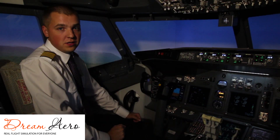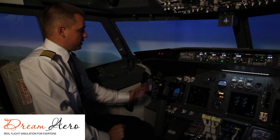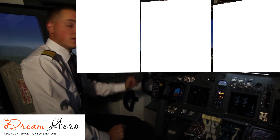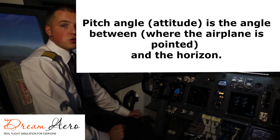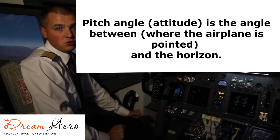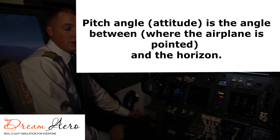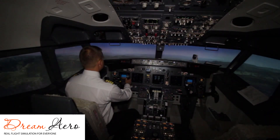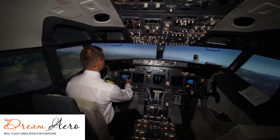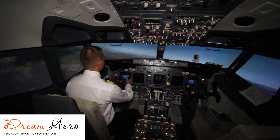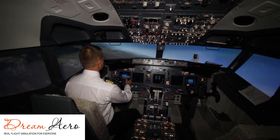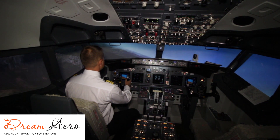The primary device used to control the airplane is the control wheel. Using the yoke, you can control the airplane's altitude in both pitch and roll. For example, when you turn the yoke to the left, the airplane increases its bank angle.